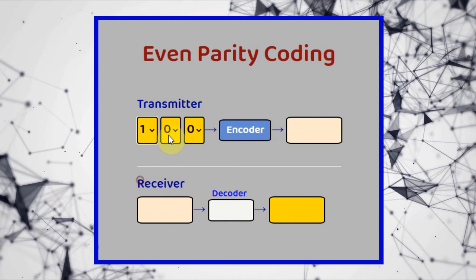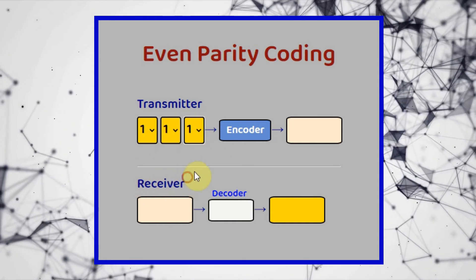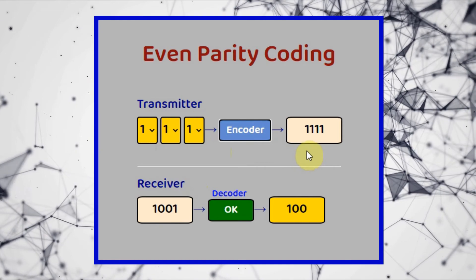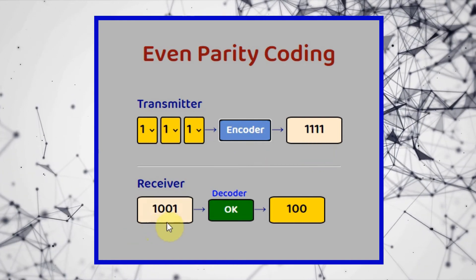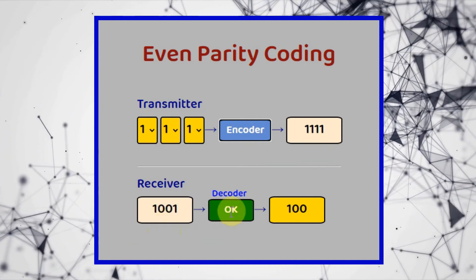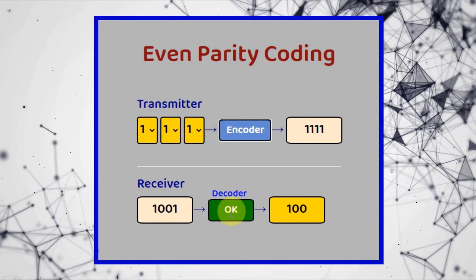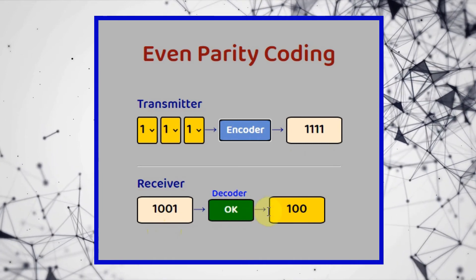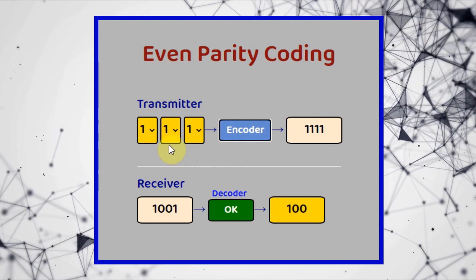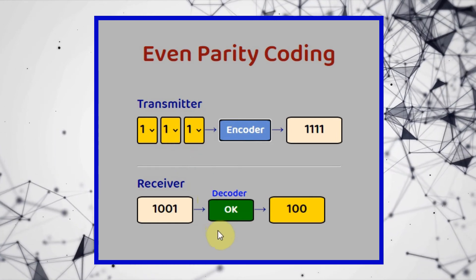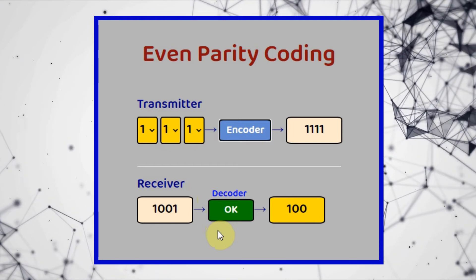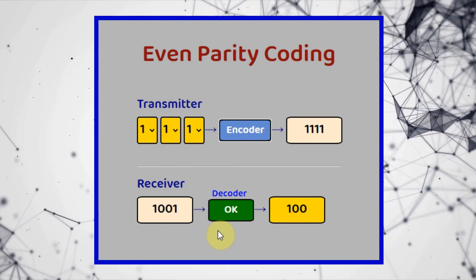Let's try another example. Note here that the transmitted codeword does not match the received codeword, but the decoder says that the received codeword is OK, and it extracts the message, which is not the same as the transmitted message. The reason for this is that we have two errors, and as I said, the code will fail when you have two or more errors.